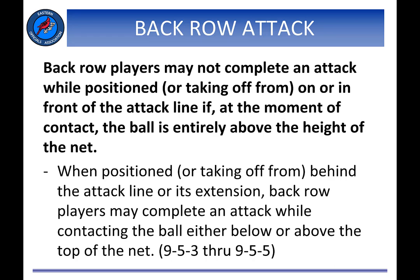Back row players are more restricted in where and how they are allowed to attack the ball. While behind the attack line, back row players may attack the ball from any position. However, while on or in front of the attack line, or having left the floor from on or in front of the attack line, a back row player may not complete an attack if, at the moment of contact, the ball is entirely above the height of the net. In the next few slides, we'll take a look at a number of back row attack situations.